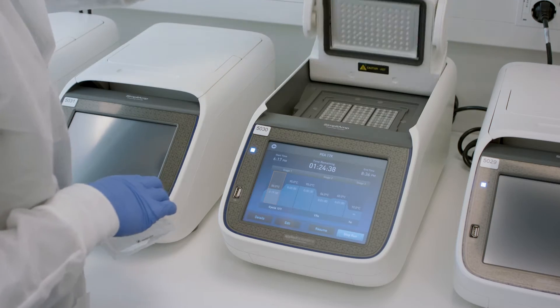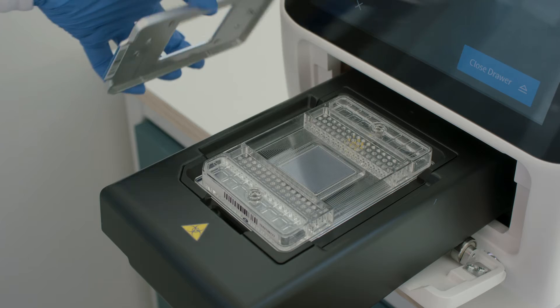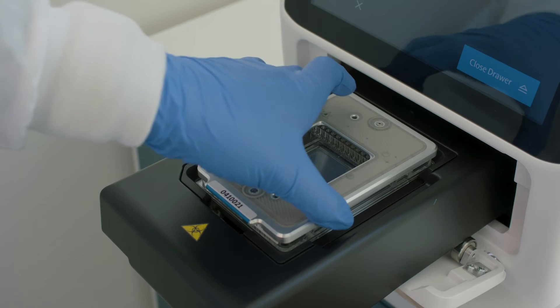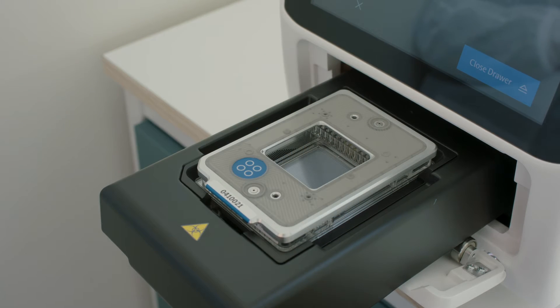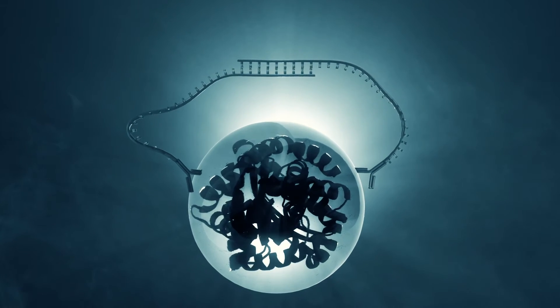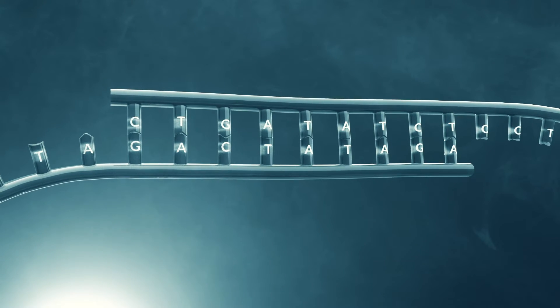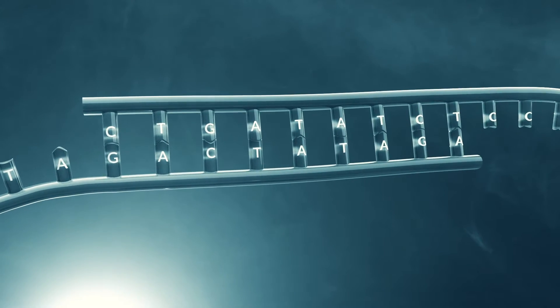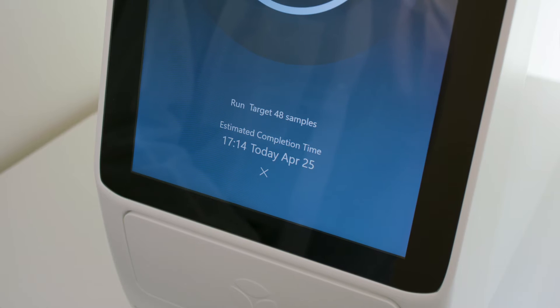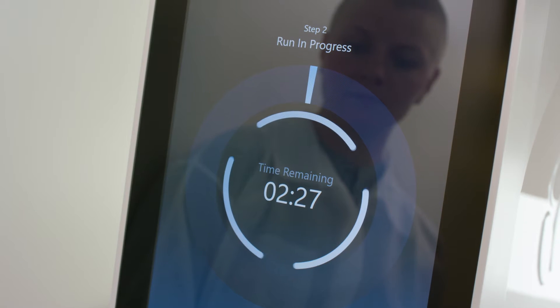The Olink Target and Flex protocols consist of three core steps: the incubation step, the extension and amplification step, and the detection step. The workflow takes place over two days, where on day one, samples undergo an immunoreaction. And on day two, samples are prepared for amplification and detection using QPCR.